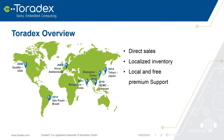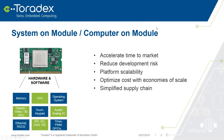Toradex was founded in 2003 in Switzerland and we still have our headquarters there. Most of the development is done in Switzerland. But in the meantime, we also have offices around the world — for example, I work in Seattle — but we also have offices in Brazil and in Asia. You can get local support in all these offices and you can also buy the product directly from there.